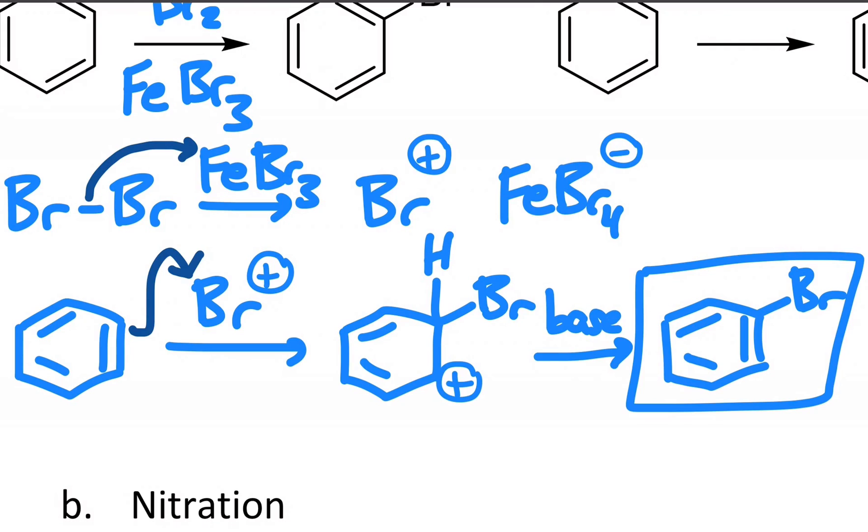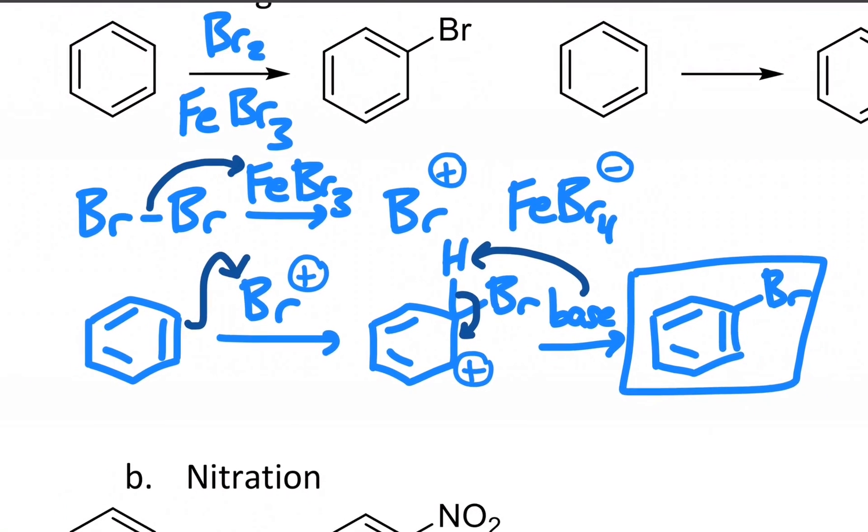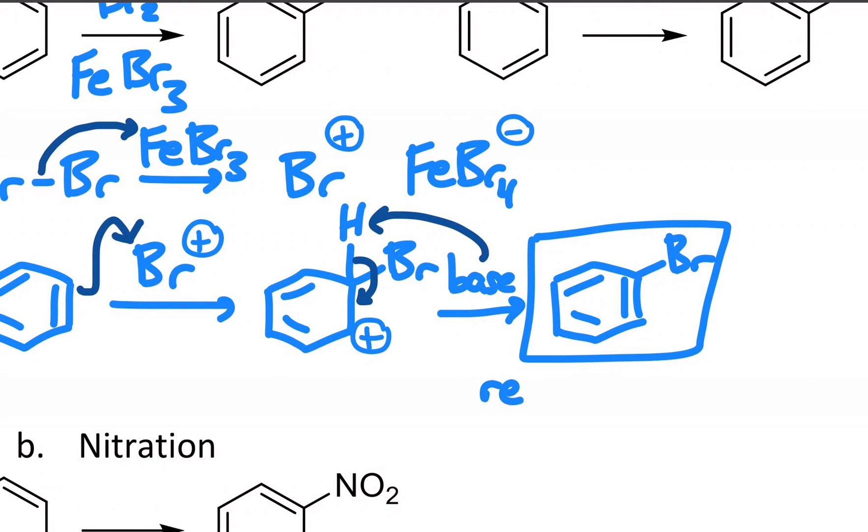Virtually anything in your reaction media can be considered basic enough to take away that hydrogen and do what looks like an E1-style mechanism to reform that pi bond. So we reform the aromatic ring.